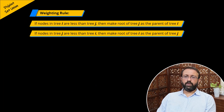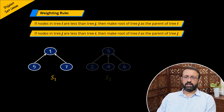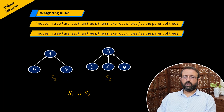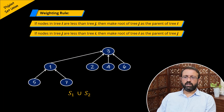Let us look at another example. We will consider two disjoint sets: the disjoint set S1 with element 1 as the root and elements 5 and 7 as its children, and another disjoint set S2 with element 3 as the root and elements 2, 4 and 6 as its children. The weighting rule states that if the number of nodes in tree S1 is more than the number of nodes in tree S2, then we make the root of tree S1 the parent of tree S2. Otherwise, we make the root of tree S2 as the parent of tree S1.